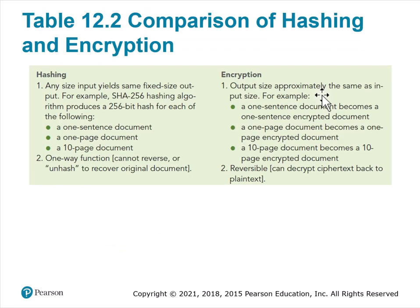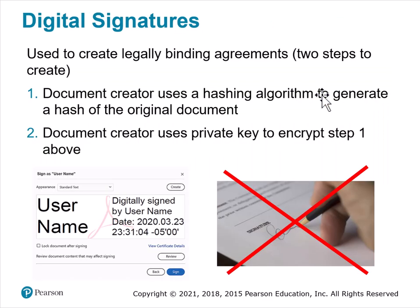Hashing yields the same output for each input, so you can take a document, hash it, and get a certain code. This is handy for comparing two pieces of text — if someone changes a few characters, you should get a different hash result. Digital signatures work this way too: a hash algorithm processes the document's characters to generate a hash value, then a private key encrypts that hash, verifying it was signed by a specific person. In Adobe Acrobat, when you digitally sign a document, you create a hash encrypted with your private key that anyone with your public key can verify.